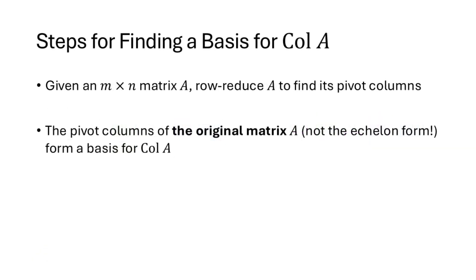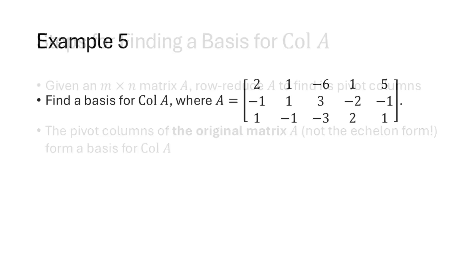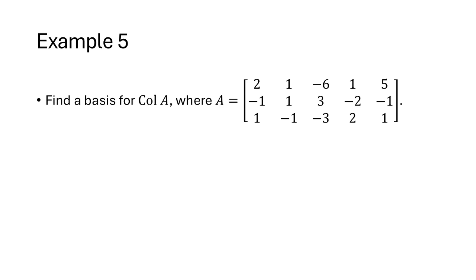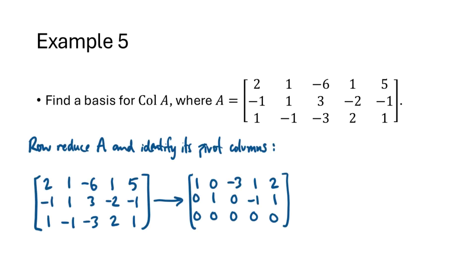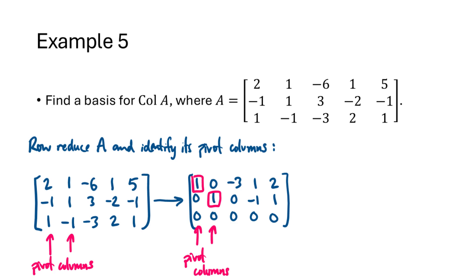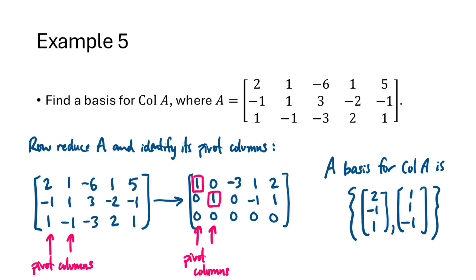Here is our process for finding a basis for the column space of A: row-reduce A to identify its pivot columns, then take those pivot columns from the original matrix — not the reduced matrix — and those form a basis for the column space of A. For example, with another matrix, after row reduction we find that the first two columns are pivot columns, so the first two columns of the original matrix form a basis for col(A). Just make sure you're using the columns of the original matrix, not the pivot columns of the reduced matrix.